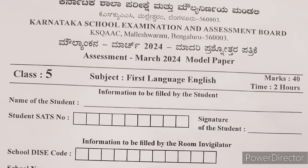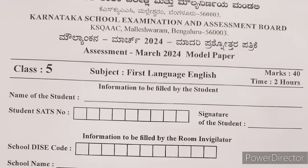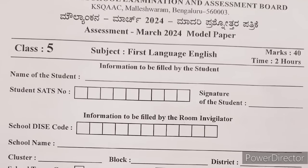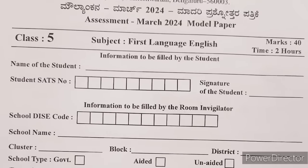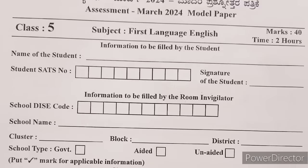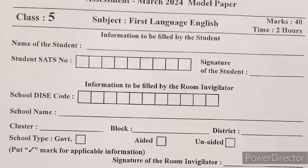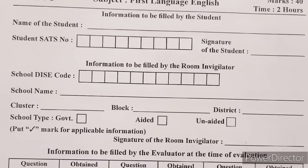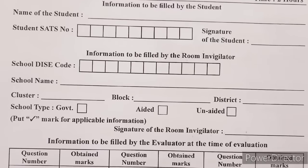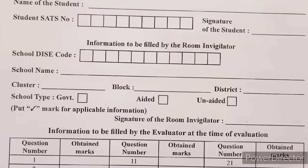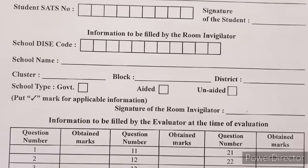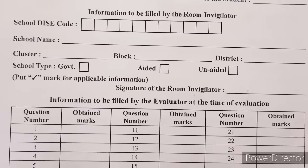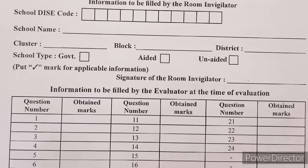Hello everyone. In this video we have the model question paper of class 5, first language English, released by Karnataka School Examination and Assessment Board. The total marks is 40 and the time given will be 2 hours. Here is the information to be filled by the students: name of the student, SATS number, and signature of the student. The rest of the information is to be filled by the room invigilator at the time of evaluation. So let us move to the question paper.